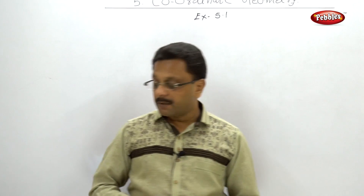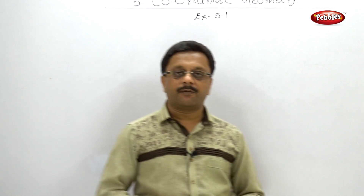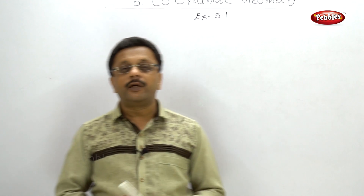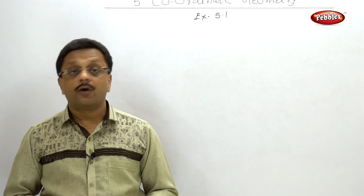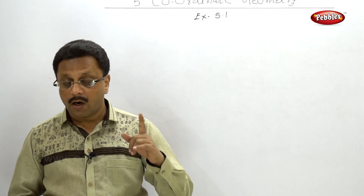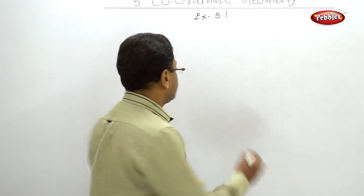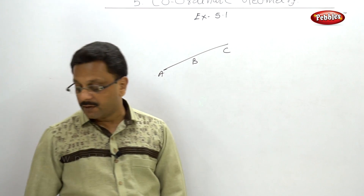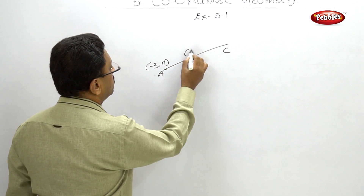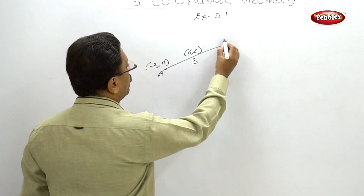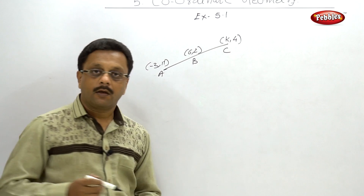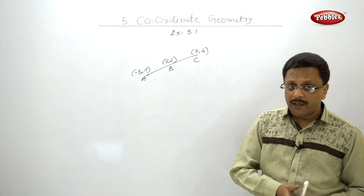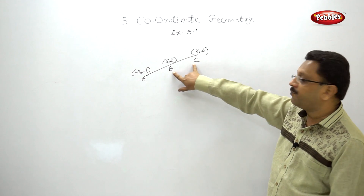Example 4: find the value of k if (-3, 11), (6, 2), and (k, 4) are collinear. This appeared in July 2015 for three marks. If three points A, B, C are collinear, it means the slope of AB and the slope of BC are equal. You can easily find the slope of AB since all four numbers are given.